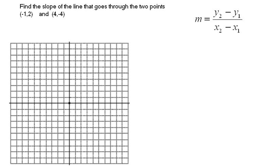I'm going to plot these points. I go to negative 1 and up 2 — there's the first point. And then 4 and negative 4: 1, 2, 3, 4 across and 1, 2, 3, 4 down. Then I'm going to draw a line through these two points, and there's the line that goes through them.